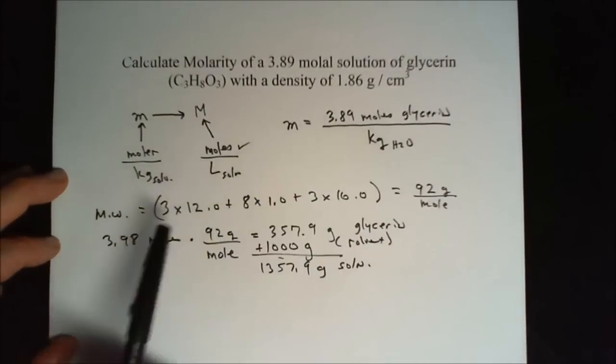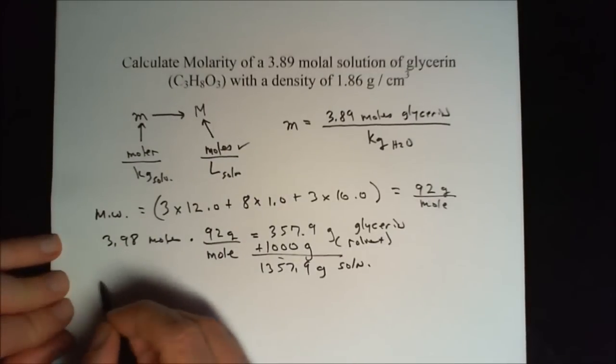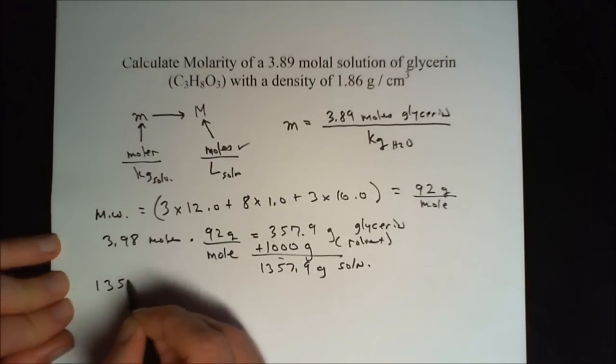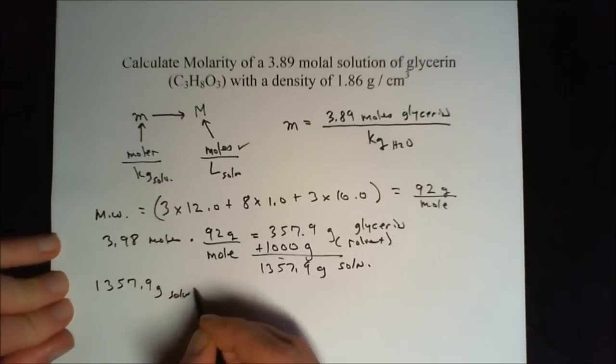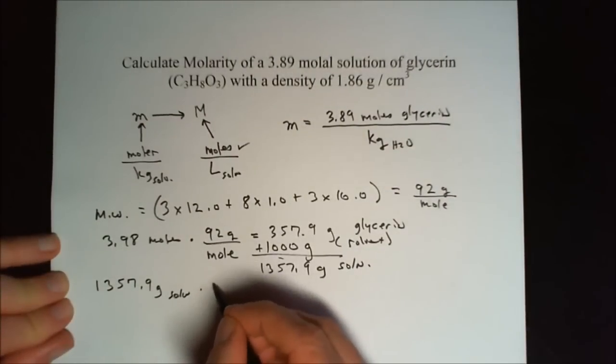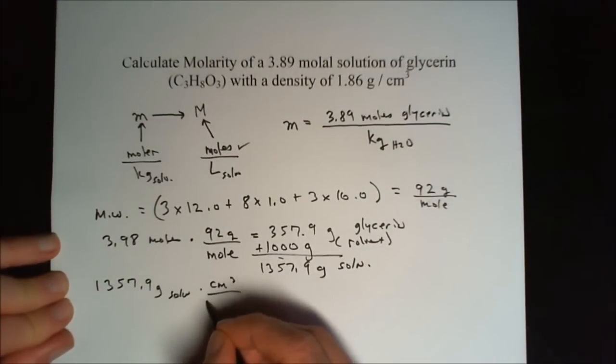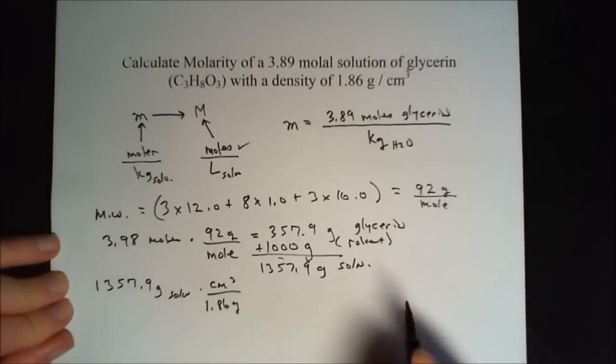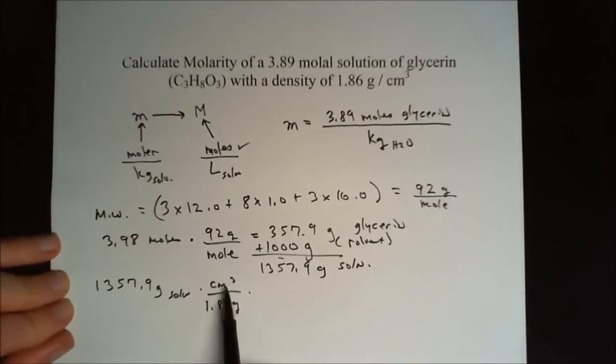Now we can go into liters of solution using our density, which is 1.86 grams per cubic centimeter. We have 1,357.9 grams of solution times our density, which is 1.86 grams per cubic centimeter.